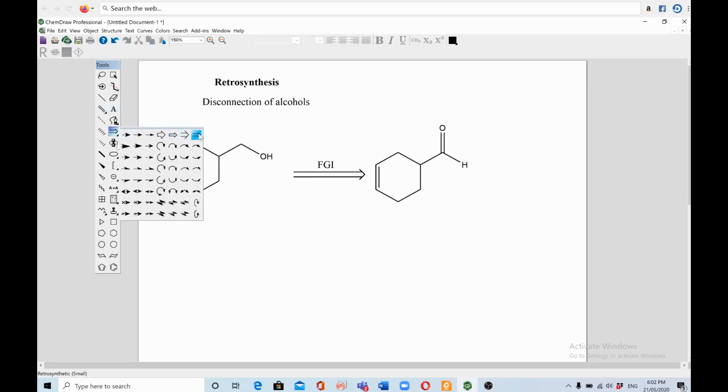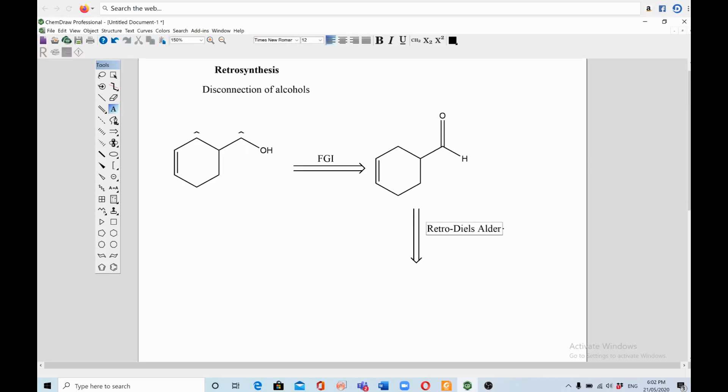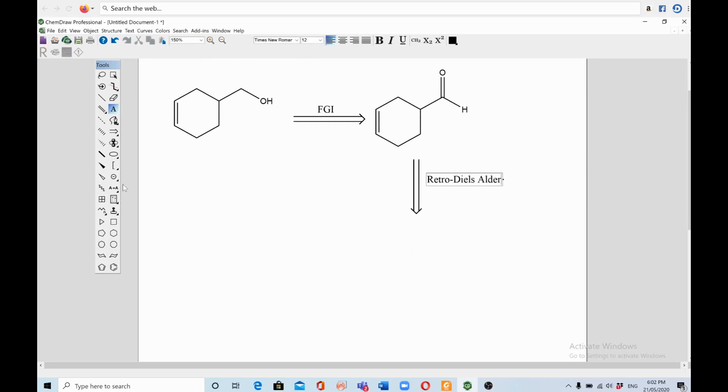And the second step, you can go further into simplest starting materials. In the next step is do the Diels-Alder reaction, so that's called retro Diels-Alder, right. That's it. In retro Diels-Alder, you need to have two parts. One is diene. Diene means alkene having two double bonds, right. So diene, remove this double bond, alright.